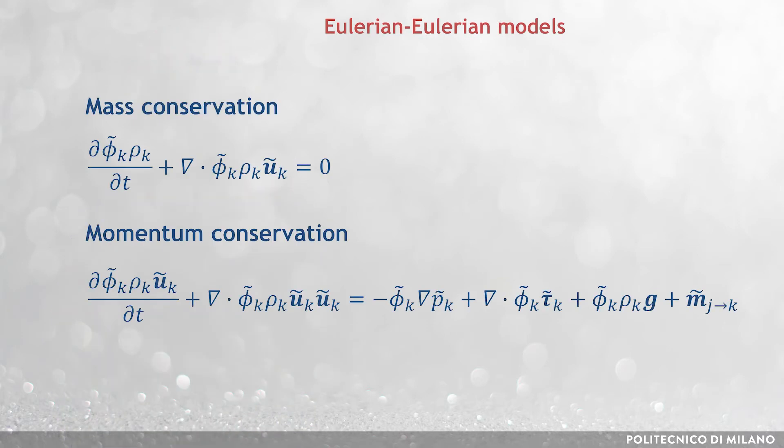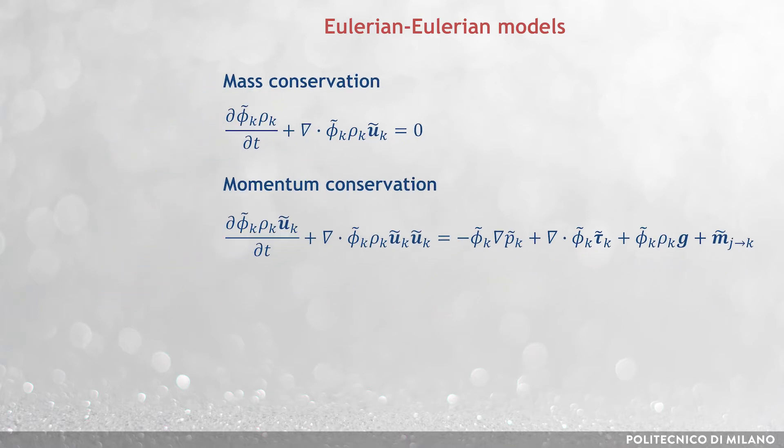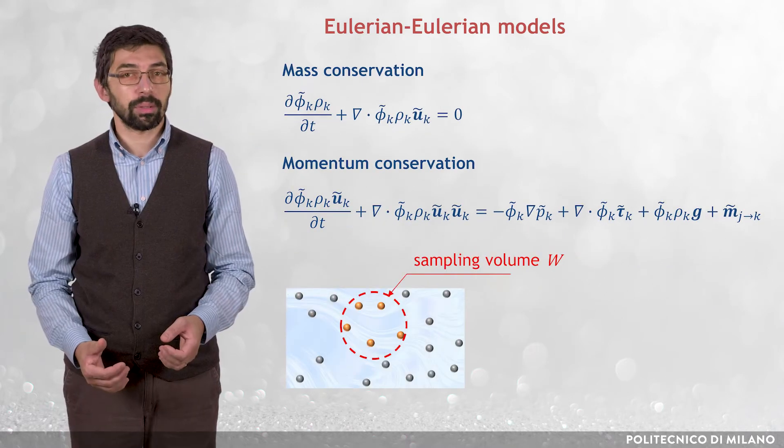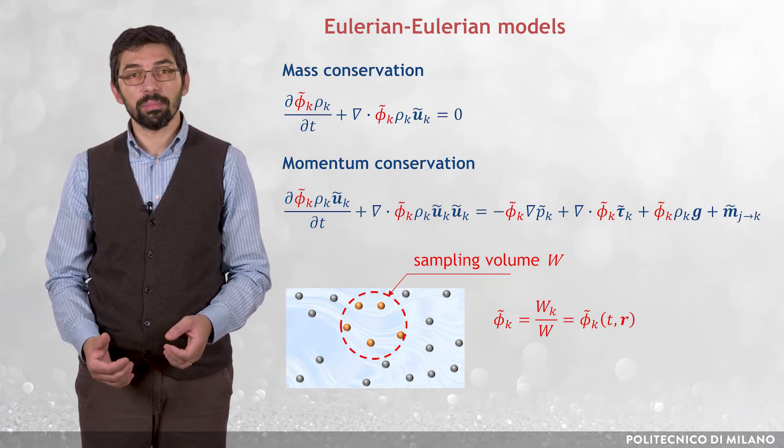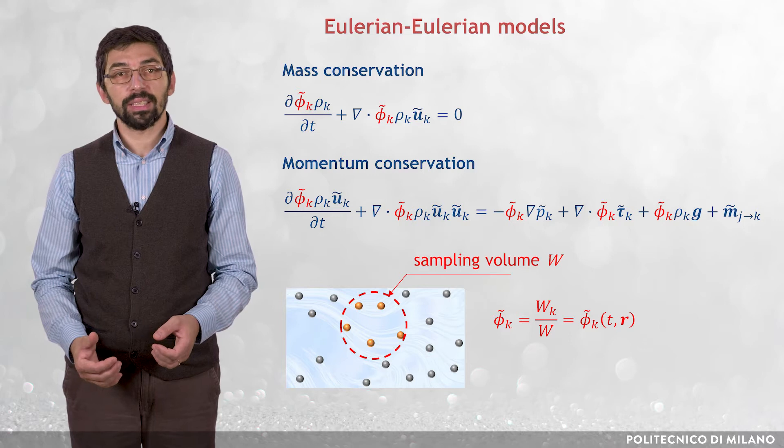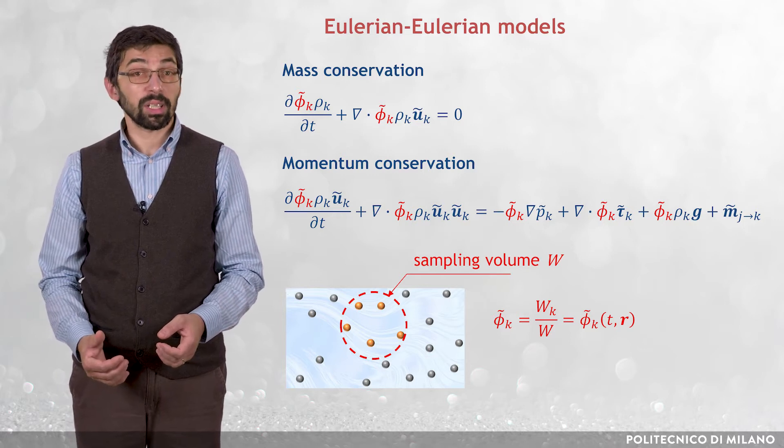As already seen, the Eulerian-Eulerian mass and momentum conservation equations are obtained through a volume sampling procedure. The local volume fraction of phase k, tilde phi k, is the ratio between the volume occupied by phase k, W_k, and the total volume W.